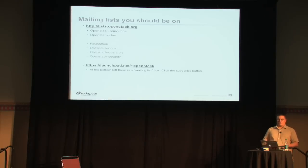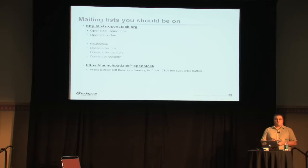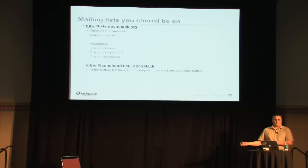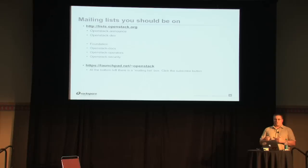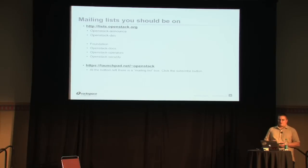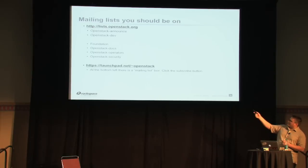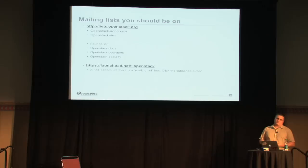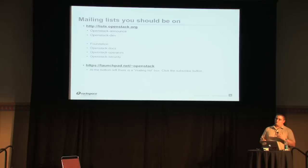There are some other lists that are useful but not mandatory — for example the Foundation list or the Operators list. If you're running OpenStack, I would recommend being on the Operators mailing list. That's where operators discuss things like what their deployment looks like, what bugs they're seeing, and how to get around problems. There's also the OpenStack list on Launchpad — notice there's a tilde before 'OpenStack' to get to the list. I'd recommend joining that one as well, because things like early sign-up for developers for the summit are announced there.